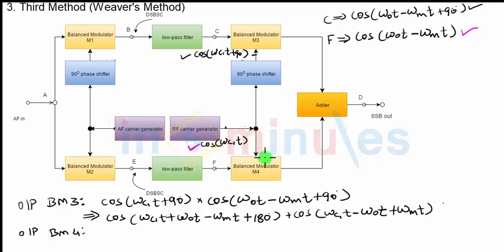So both these signals enter into the balance modulator 4. Let us multiply the two signals. We will get cos of omega c1t multiplied with cos of omega naught t minus omega mt. That's the signal coming from point F.